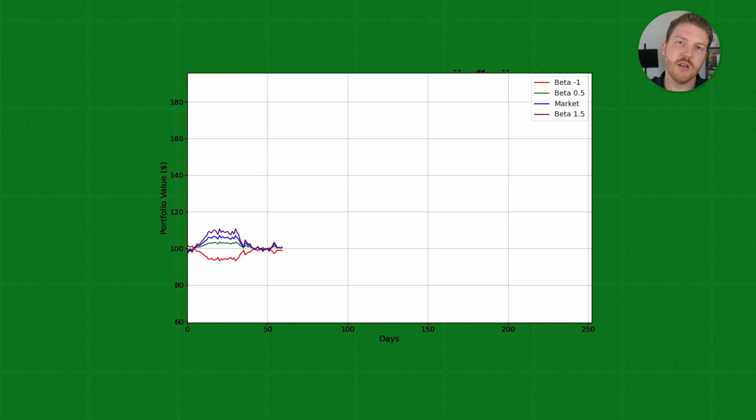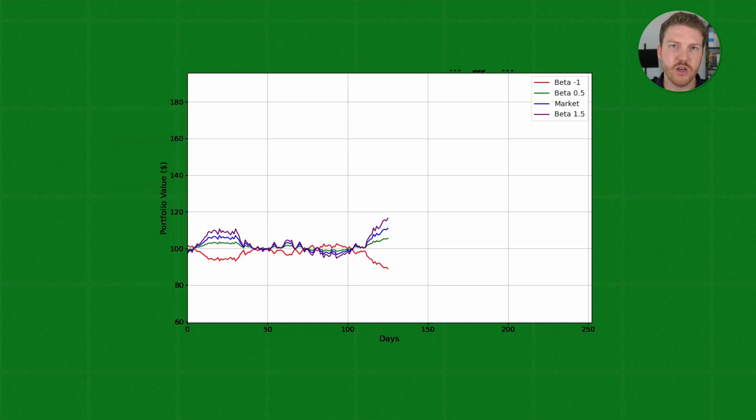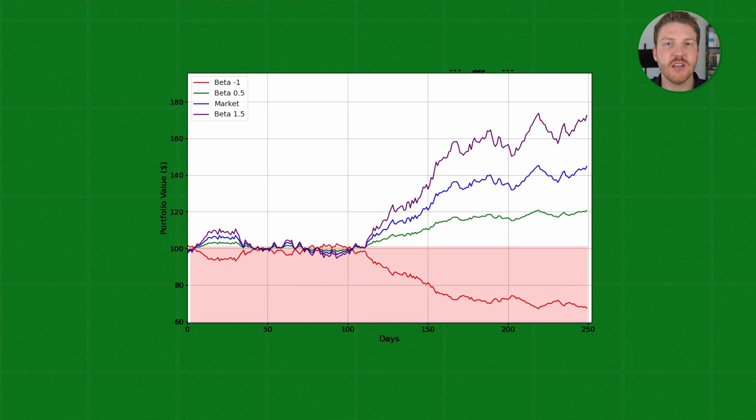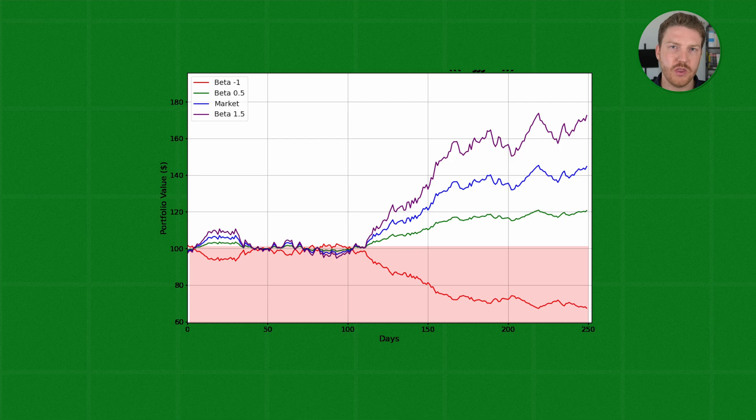In this simulation that I created, we can see how stocks or portfolios with different betas will change in value as the market changes in value. Take special note of the portfolio with a beta of negative 1, which actually moves in the opposite direction of the market.